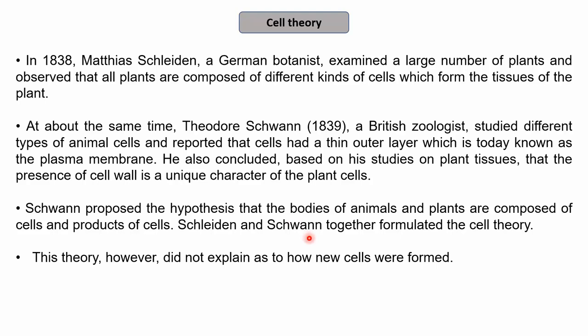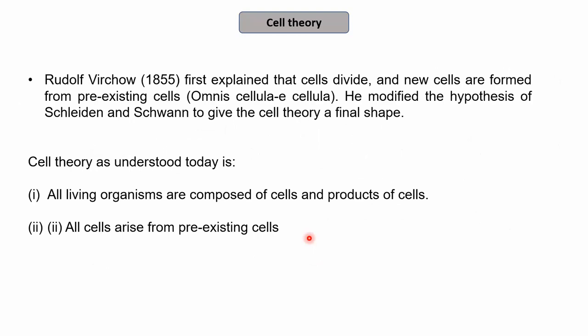Together, Schleiden and Schwann formulated the cell theory. However, a limitation of this theory was that it did not explain how new cells are formed. Later, Rudolf Virchow first explained that cells divide and new cells are formed from pre-existing cells — a concept also known as 'Omnis cellula e cellula.' He was the first to explain that cells arise from pre-existing cells.